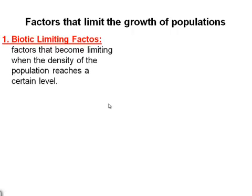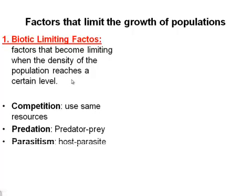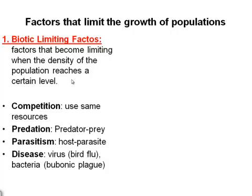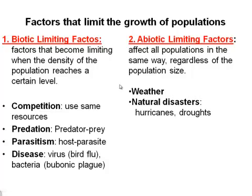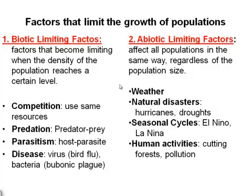Lastly, we have factors that limit the growth of populations. We have our biotic limiting factors — remember, biotic means living. These are factors that become limiting when the density of a population reaches a certain level. Examples are competition, predation, parasitism, and disease. The other limiting factors are abiotic — they affect the population in the same way regardless of population size. These include weather, natural disasters, hurricanes, droughts, fires, seasonal cycles like El Niño and La Niña, and human activities such as cutting down forests and pollution.